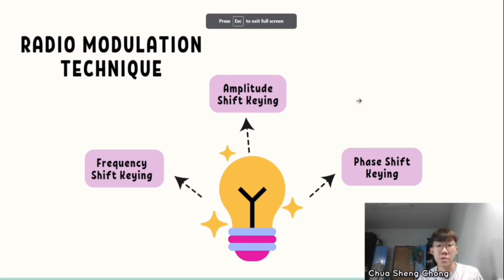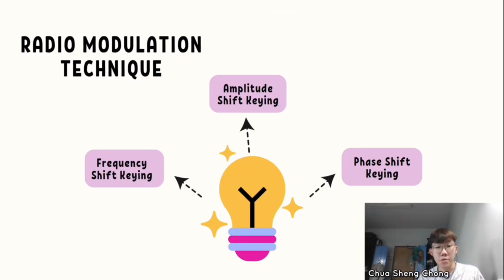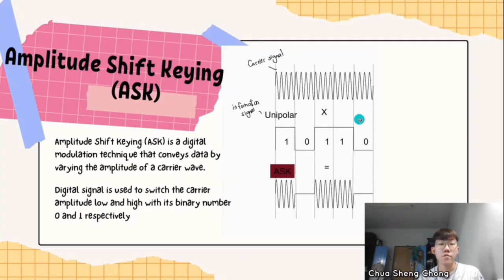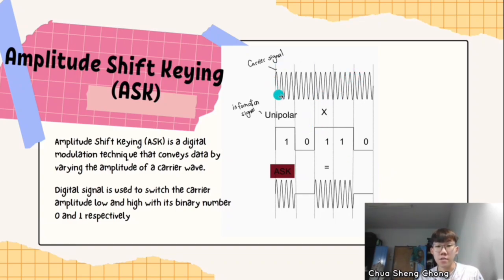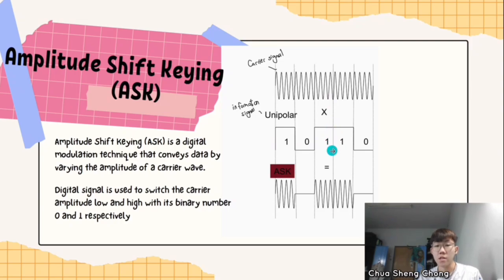Now I will explain the radio modulation techniques: Amplitude Shift Keying (ASK), Frequency Shift Keying (FSK), and Phase Shift Keying (PSK). For ASK, it is a digital modulation technique that conveys data by varying the amplitude of a carrier wave. There is a carrier signal multiplied by an information signal. In the information signal, a one means high amplitude and a zero means low amplitude. After multiplying the carrier signal by the information signal, the result is the ASK final waveform.